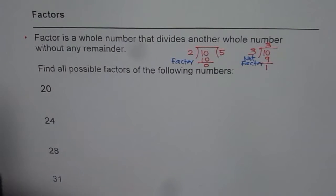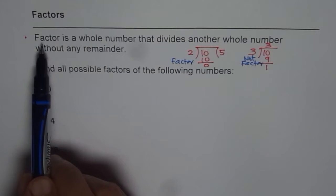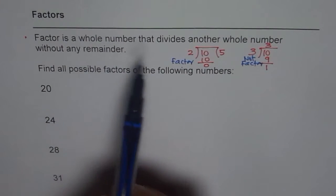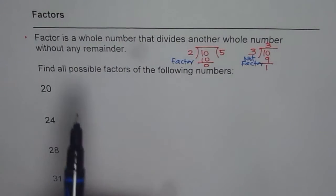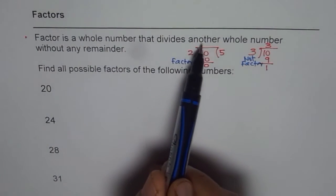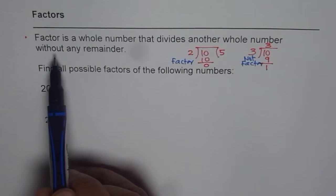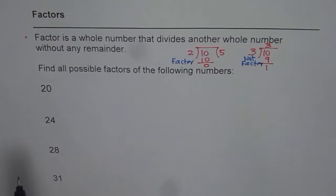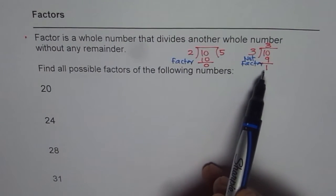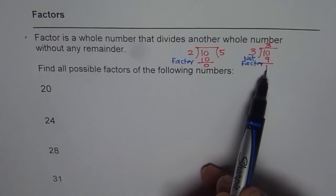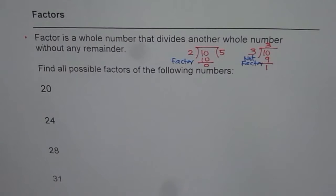So let us get back to the definition which says factor is a whole number, so 2 is a whole number, that divides another whole number, 10. So we are dealing with whole numbers without any remainder. No remainder means it is a factor. If there is a remainder other than 0, then it is not a factor.